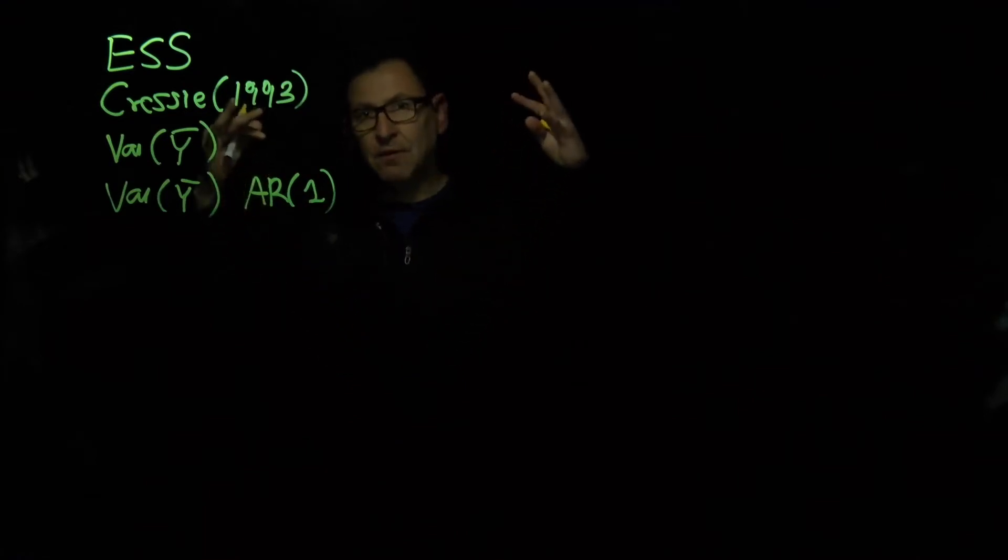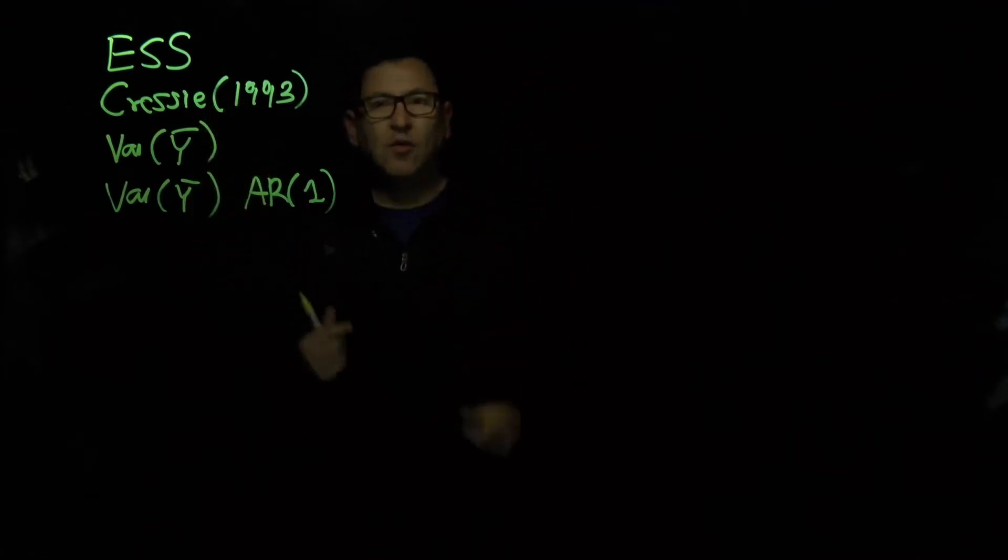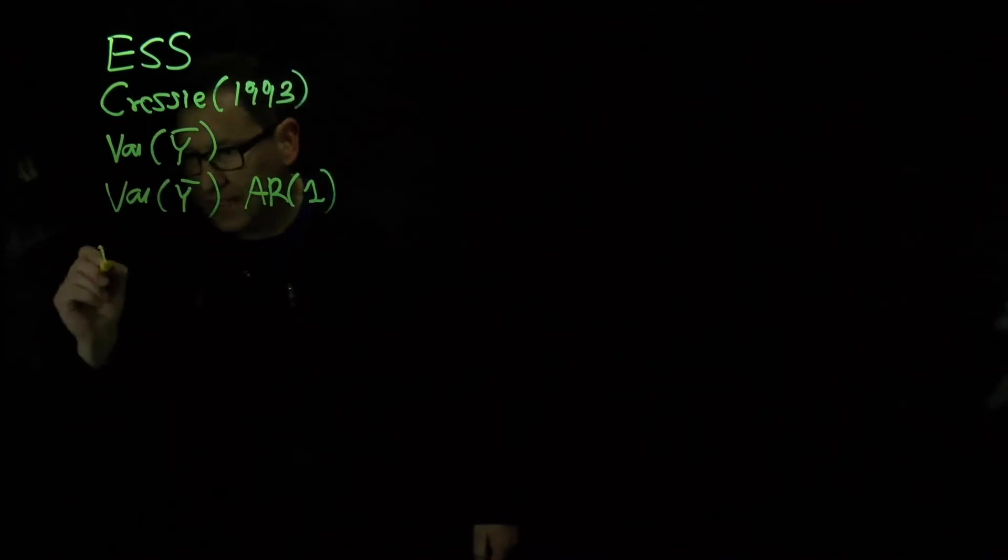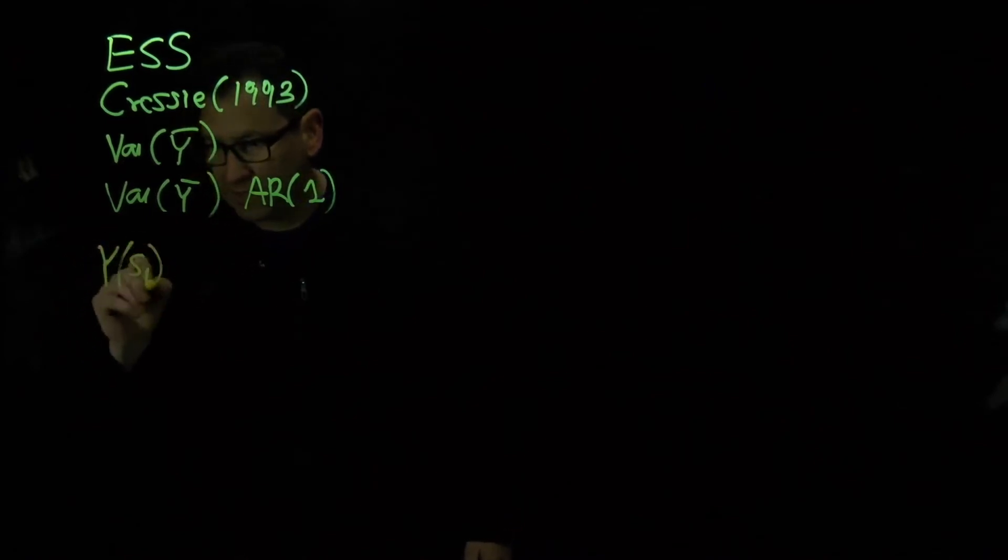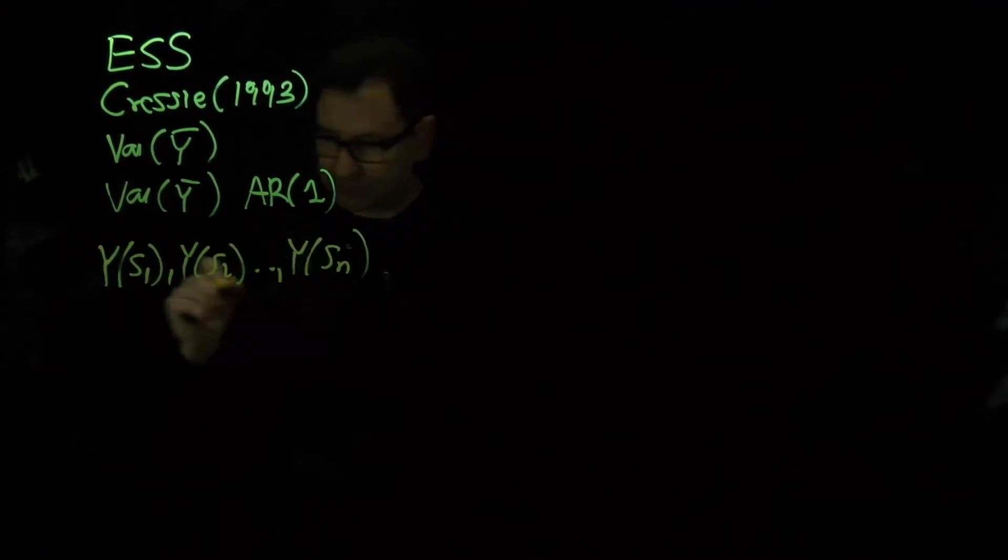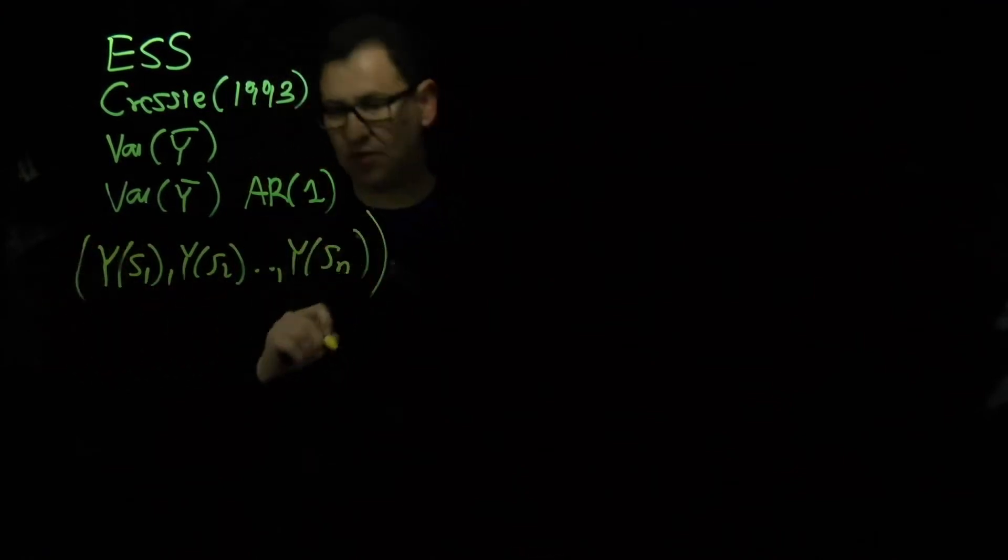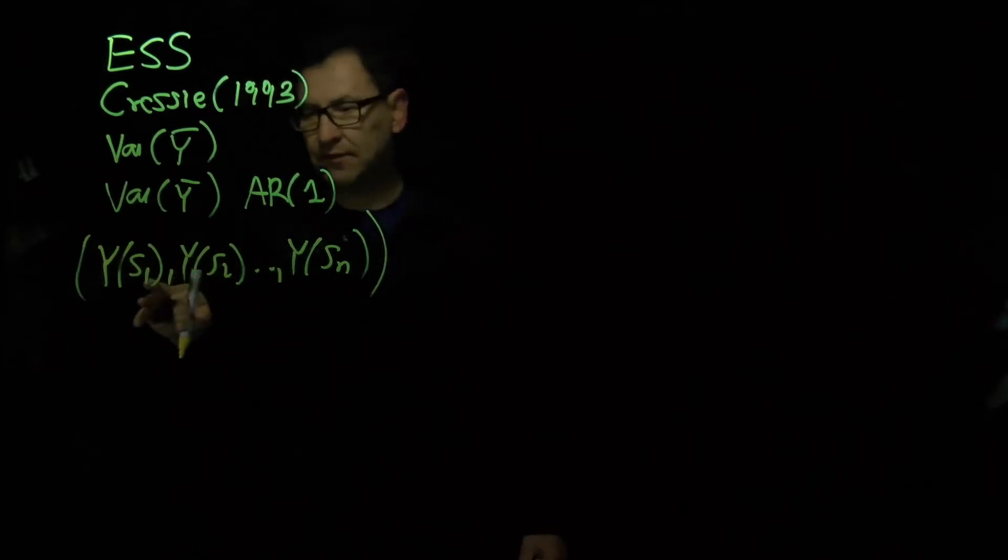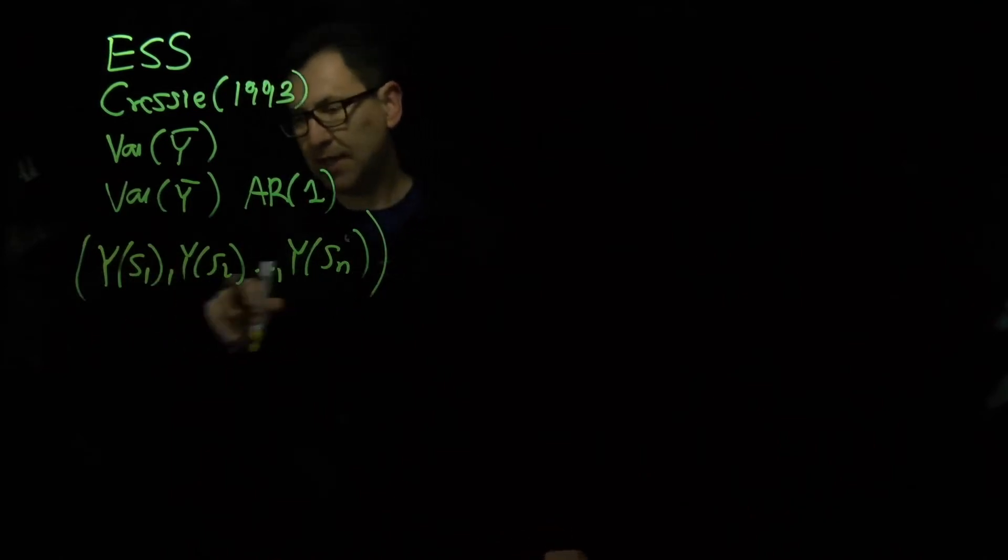This means that if we have Ys1, Ys2 until Ysn, we put this in a vector and these are the locations in the space and this is the variable of interest.